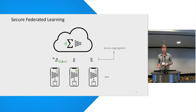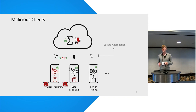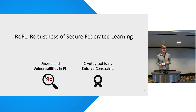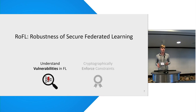One issue that secure FL systems still do not address is malformed updates from malicious clients, and in fact the privacy properties of these systems make malicious updates harder to detect. In this work we address this issue by introducing a new protocol that allows clients to prove constraints on their encrypted updates in a privacy-preserving way. But before we could do that, we needed to understand what constraints could even be helpful for robustness — that is what I will focus on in the first part of this talk.